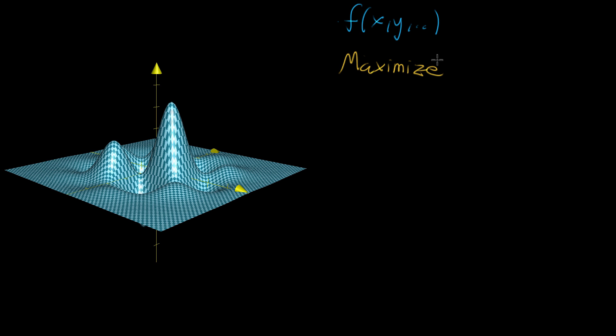What this means is you're looking for the input points, the values of x and y and all of its other inputs, such that the output f is as great as it possibly can be.